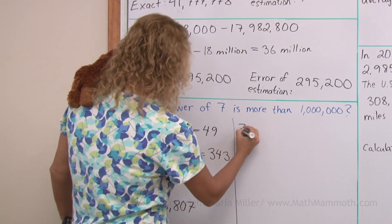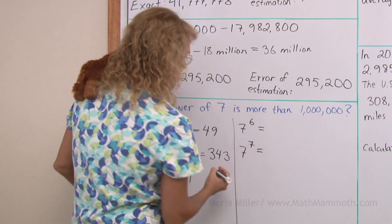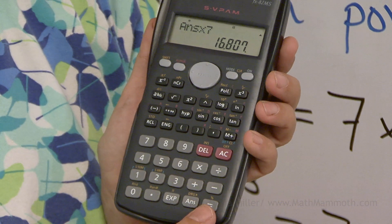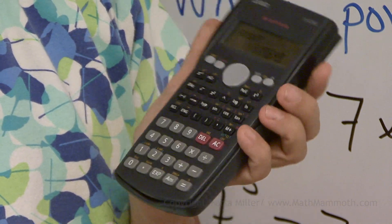Let's see, seven to the sixth power, seven to the seventh power. Again, I press equals. So we get 117,649.